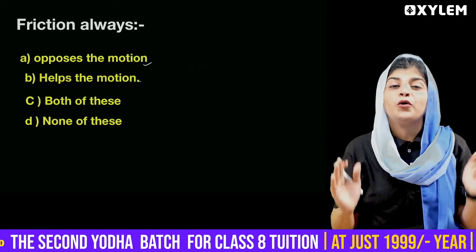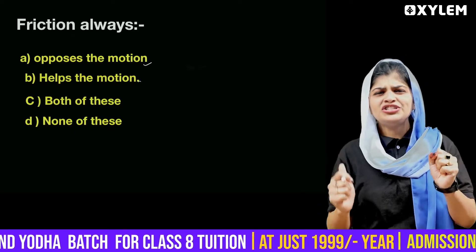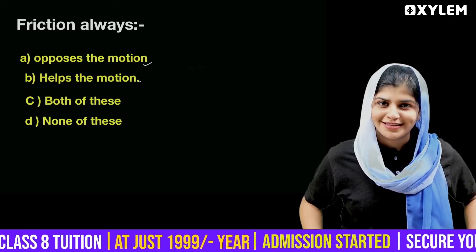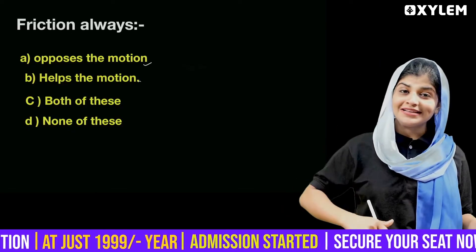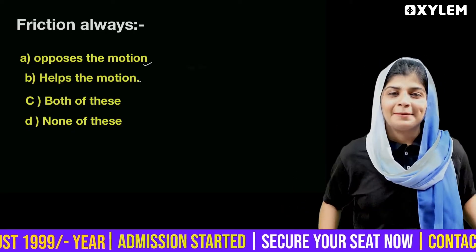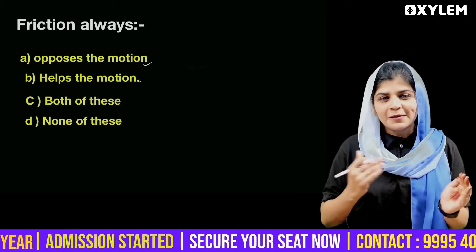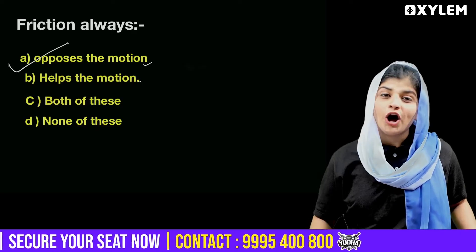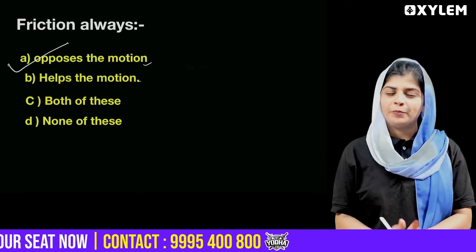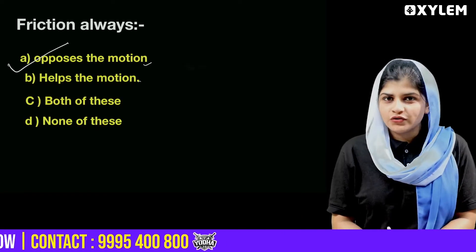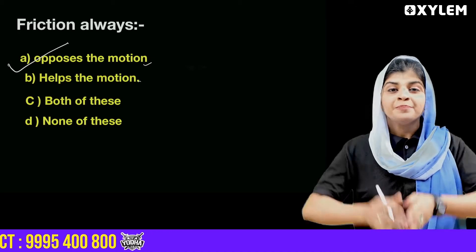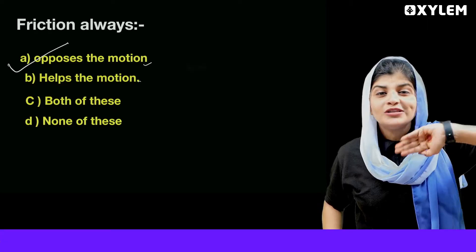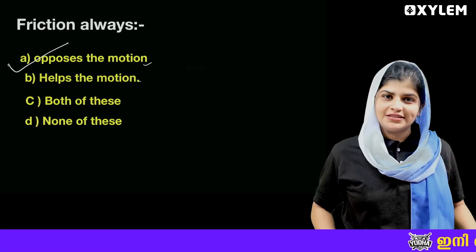Friction is an opposing force. It is a frictional force. So the first answer is A — it opposes the motion. The motion is opposed by the friction force. Friction acts on the surface in contact — that is the friction force.